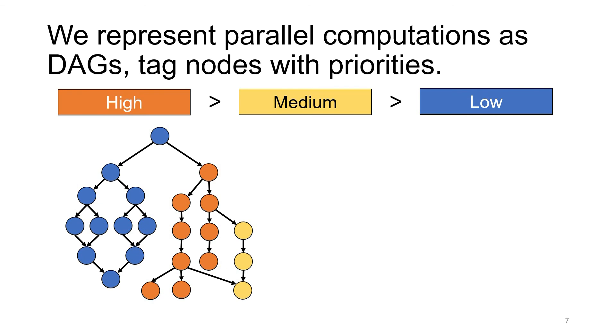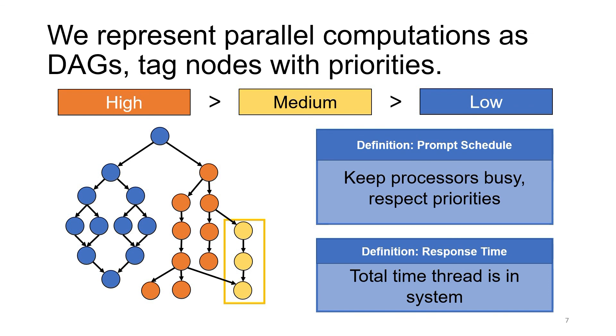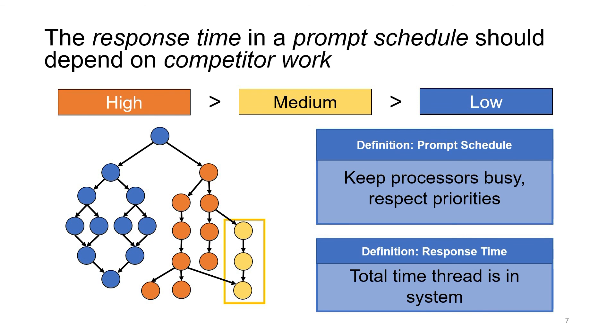We model programs as directed acyclic graphs, or DAGs, where the nodes are portions of the computation and edges are dependencies. Running the program then corresponds to assigning nodes to processors at each point in time, respecting the dependencies. This is called a schedule of the DAG. Let's suppose we have two processors. Then we'll want to keep both of them busy whenever possible, and also preferentially assign higher priority nodes. Such a schedule is called prompt. For a prompt schedule, if we take a thread represented by a piece of the DAG, say this piece I've outlined in gold, we want to be able to bound the response time, or the total time that it's in the system. Intuitively, this response time should only depend on the amount of work that may happen in parallel with the gold-outlined piece, so not including ancestors or descendants, and is it a higher or equal priority. The gold-outlined thread may compete with this other work for CPU time, so you have to consider all of this work outlined in gray, and not just the thread itself. We'll call this the competitor work.